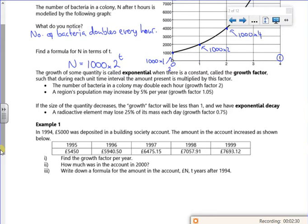The growth of some quantity is exponential when there is a constant called the growth factor such that it's multiplied by the factor. So it's not added, it's multiplied by it. For hours you double each hour, so it's got a growth factor of two. I might link it to percentages. If there's a five percent increase, it's now at a hundred and five percent of what it was, so it's got a growth factor of 1.05.